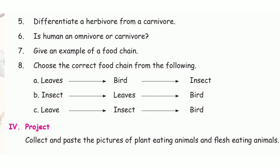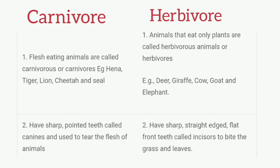Fifth question: differentiate a herbivore from a carnivore. Carnivores are flesh-eating animals. Examples: tiger, lion, cheetah, shark. They have sharp pointed teeth used to tear the flesh of animals. Herbivores are animals that eat only plants. Examples: deer, giraffe, cow, goat, and elephant. They have short, straight, flat front teeth used to eat grass and leaves.